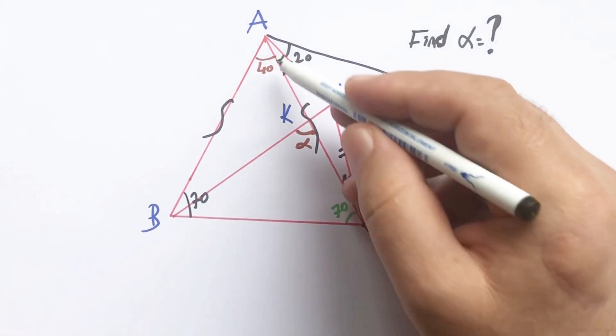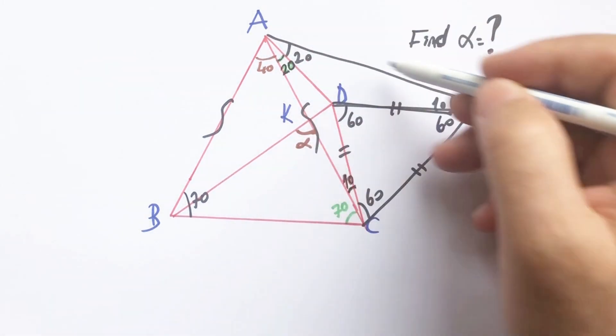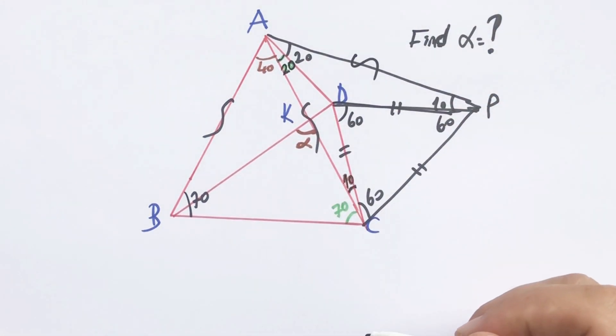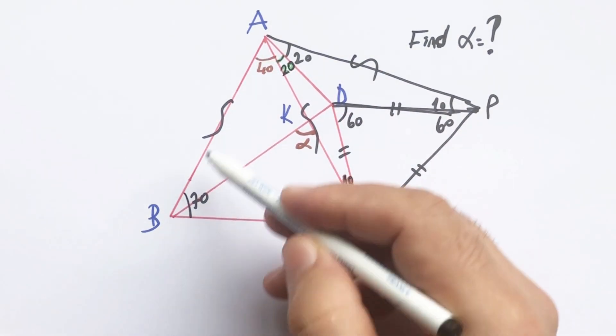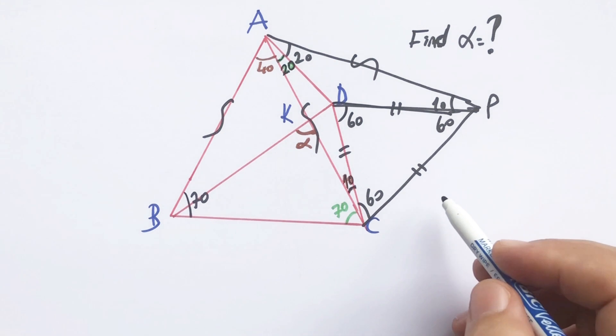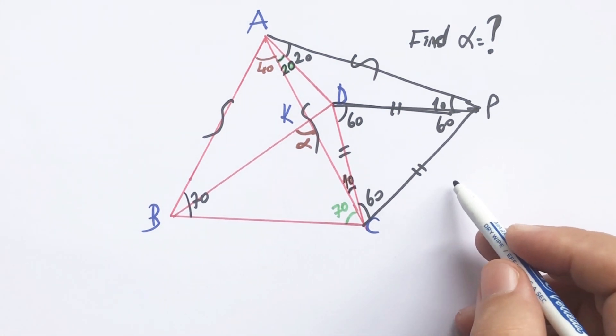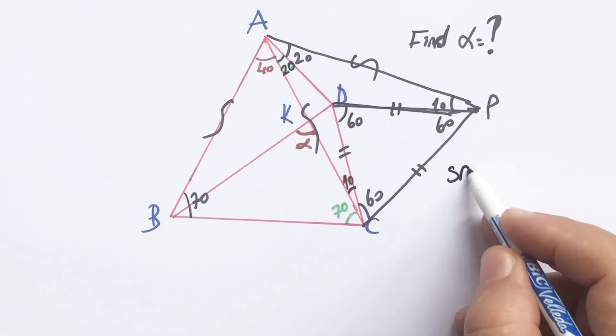If you notice that this triangle and this triangle and this triangle are congruent according to side angle side.